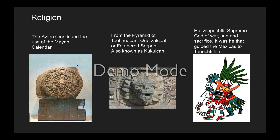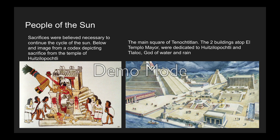Aztec religion was closely tied to previous religions — they still had a calendar and followed the same deities from the Mayans and Teotihuacan. This is Quetzalcoatl, the feathered serpent. Huitzilopochtli was their god of war, sun, and sacrifice — it was he who guided the Mexicas to Tenochtitlan. The Aztecs are the people of the sun; they performed sacrifices believing they were necessary to continue the sun's cycle. Shown here is a codex depicting sacrifice at the temple of Huitzilopochtli, and a rendering of the main square in Tenochtitlan with the Templo Mayor — one side for Huitzilopochtli, another for Tlaloc, the god of rain and water.